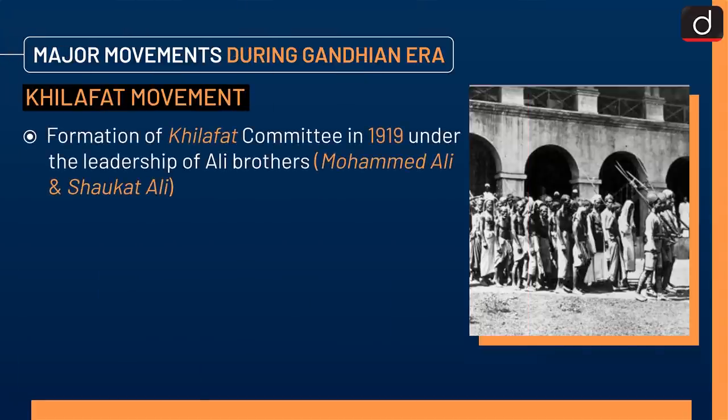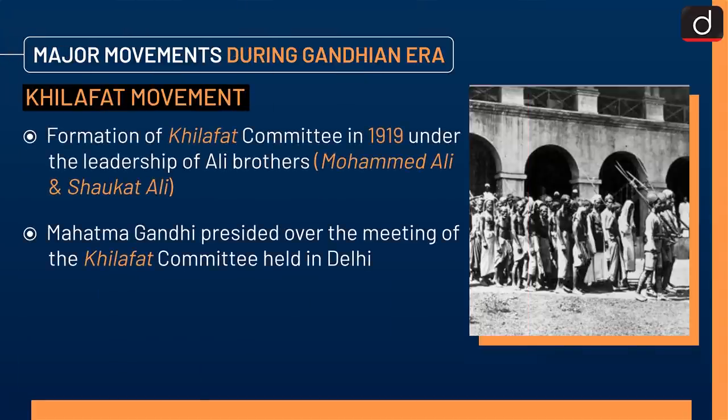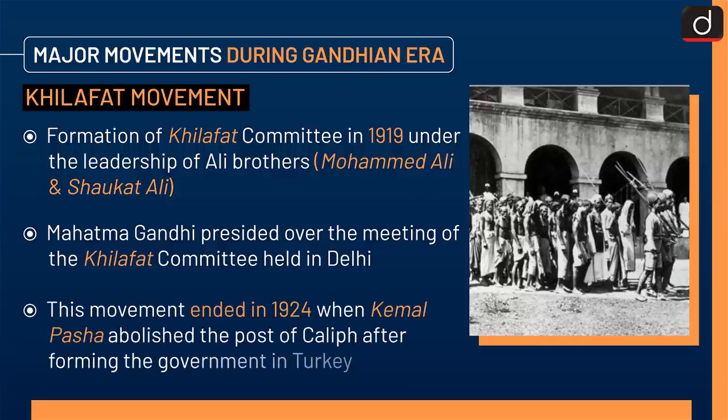Next is the Khilafat Movement, which started with the formation of the Khilafat Committee in 1919 under the leadership of the Ali Brothers, Muhammad Ali and Shaukat Ali. Mahatma Gandhi presided over the meeting of the Khilafat Committee held in Delhi. This movement ended in 1924 when Kemal Pasha abolished the post of Caliph after forming the government in Turkey.